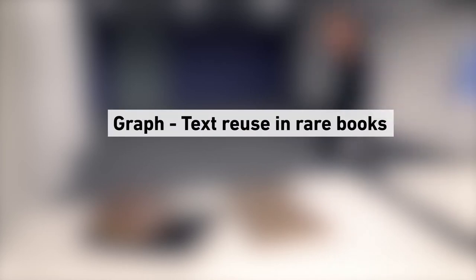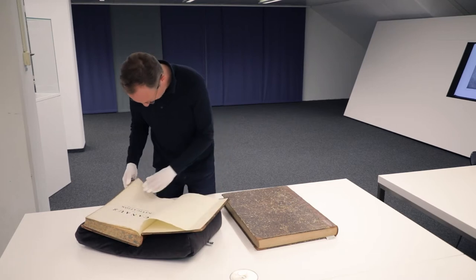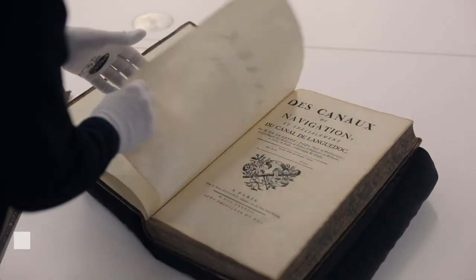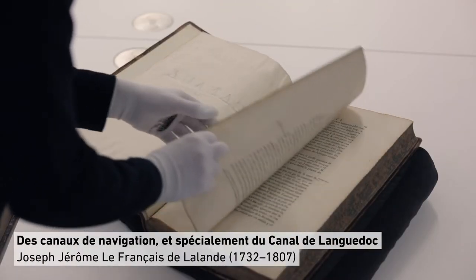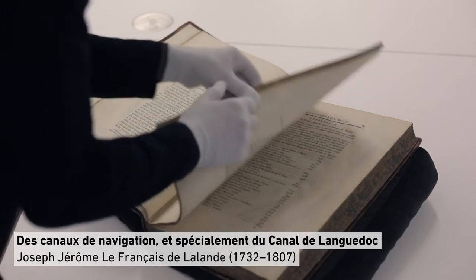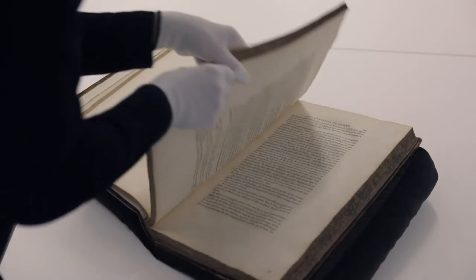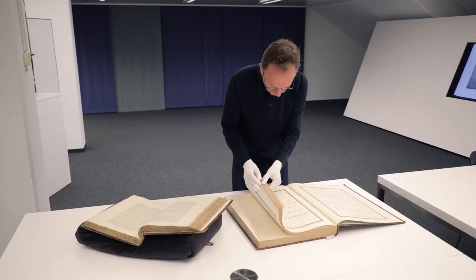Here we have two books which describe projects for the building of the Canal de Bourgogne in France. One published in 1788, the other five years later. Strikingly, the words they used to describe these projects are almost identical. It's actually clear that the newer book reused part of the text of the older book. However, the newer book doesn't cite the older book in the kind of way that we today would find proper.